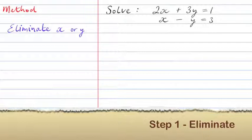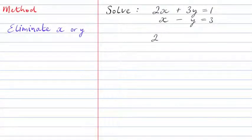What could we multiply either equation by so when we add them, the x's or y's would cancel out? If we multiply the second equation by minus 2, this would give us minus 2x plus 2y equals minus 6.